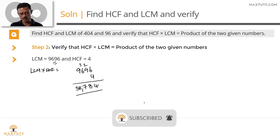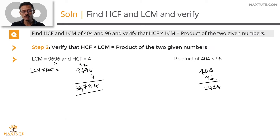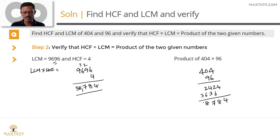Now let's check whether that equals the product of the two original numbers: 404 × 96. Computing 404 × 96 gives 38,784. These two results are the same — 38,784. So we have verified that the product of the LCM and HCF is the same as the product of the two given numbers.